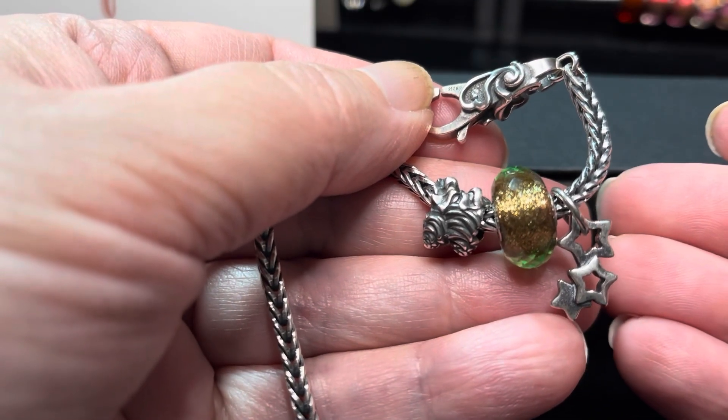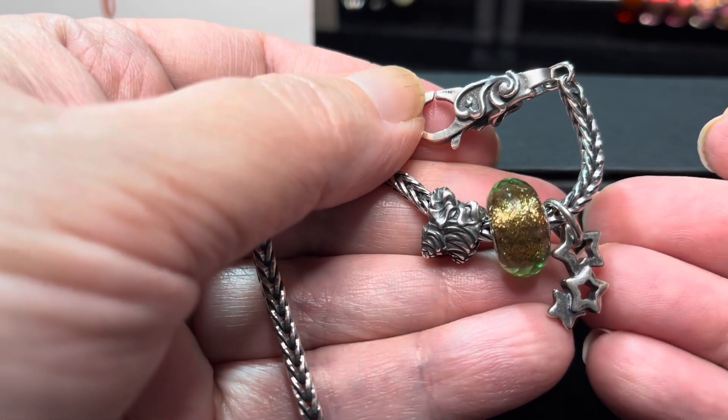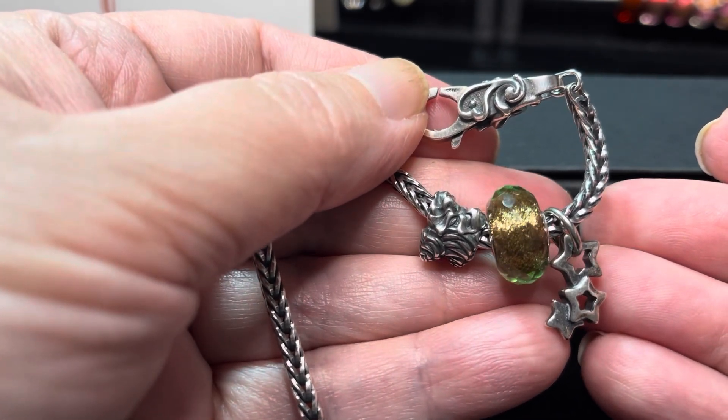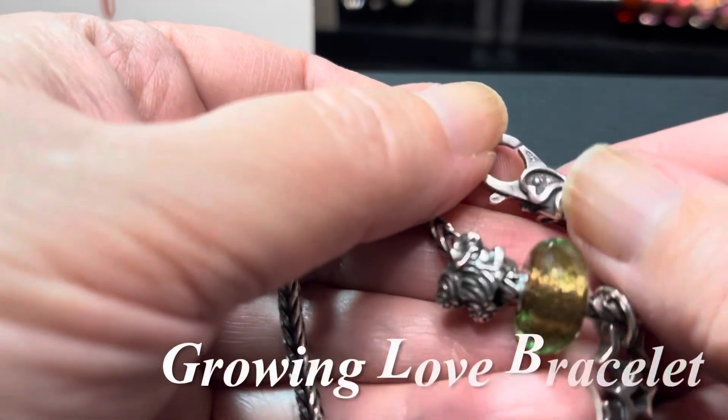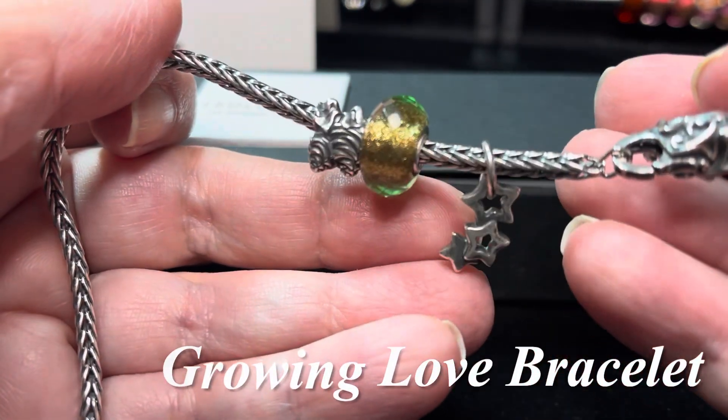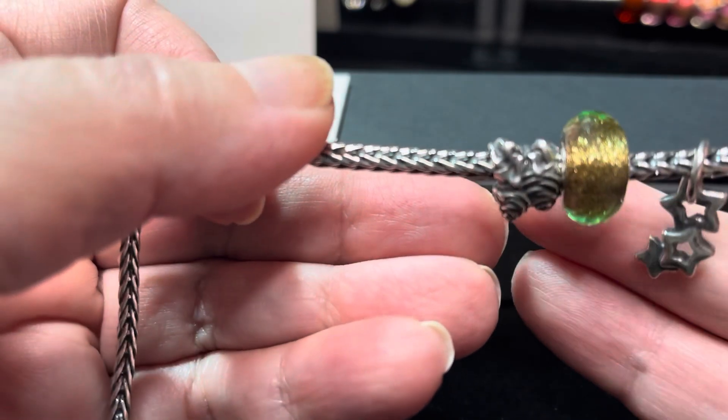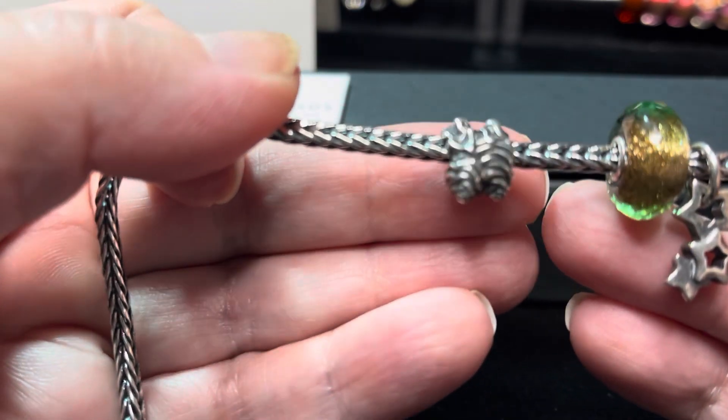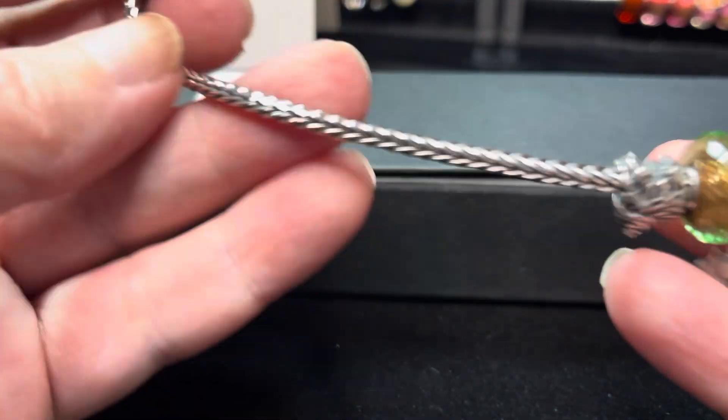One of the things that I was looking the most forward to with the Troll Beads Black Friday sale was the Growing Love bracelet. This bracelet includes a lock, a dangle charm, a glass bead, a silver bead, and the foxtail chain. I got this in a 19 centimeter.